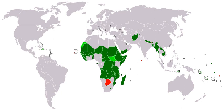A nation's GDP per capita compared with other nations can also be a reference point. The term 'developing' describes a currently observed situation and not a changing dynamic or expected direction of progress. Since the late 1990s, developing countries tended to demonstrate higher growth rates than developed countries.